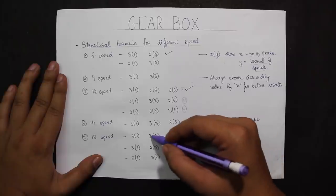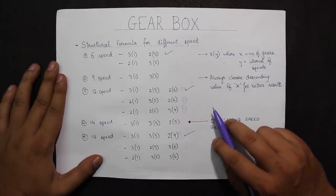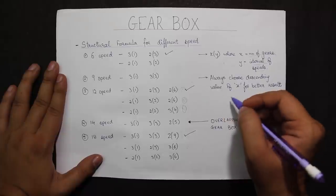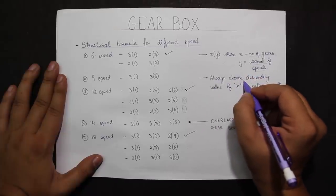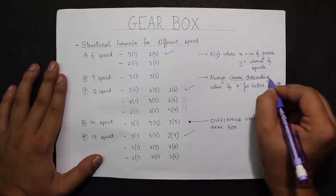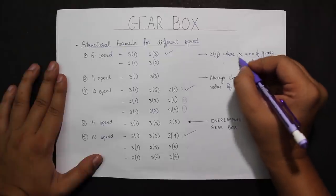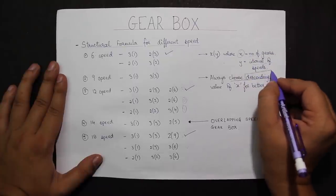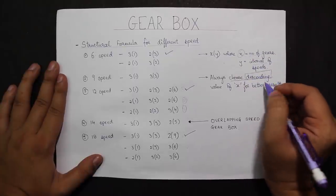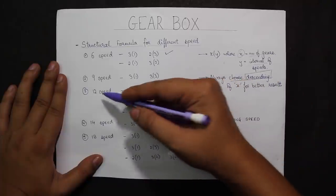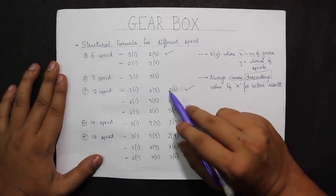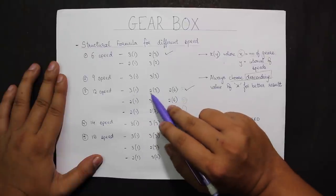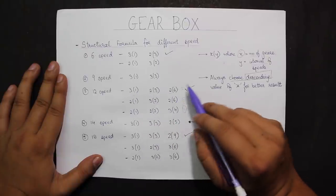Which combination do we choose? According to the rules, the best efficiency is achieved when the value of X is in descending order. For instance, in the 12-speed gearbox the value 3-2-2 is in descending order, so that is the one to choose when designing the gearbox.